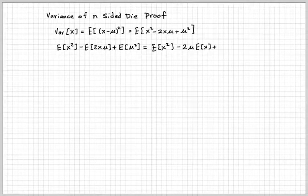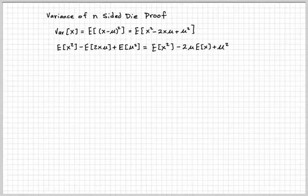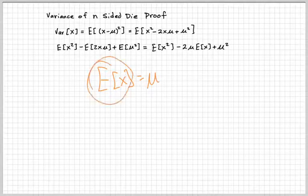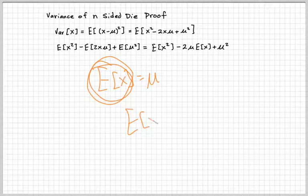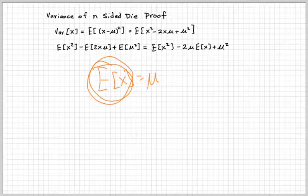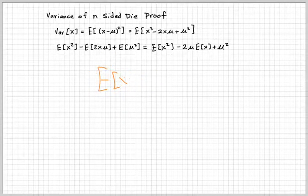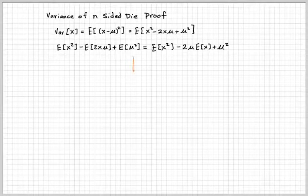It's one of these properties where you have the expectation of x squared. You have minus the expectation of 2x mu, and then the expectation of mu squared. There's a few things that we can simplify this. The x squared, the expectation of x squared is the same, but we can pull out the constant 2 and mu because those are numbers, and we have the expectation of x. Now, the expectation of x is just mu. And then the expectation of a constant squared is that value. So mu squared is a constant in this case.